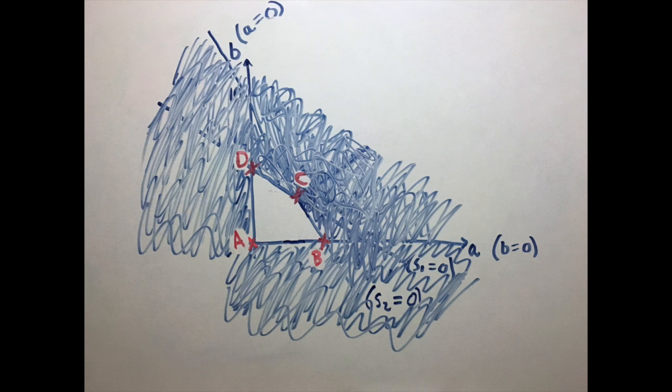We start by taking a known point of intersection, that's when A and B are both equal to 0. The value of the objective function here is going to be P = 20 × 0 + 10 × 0, which is equal to 0.